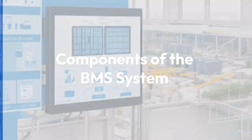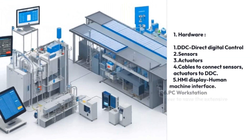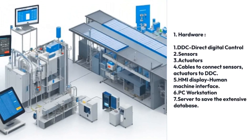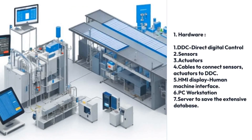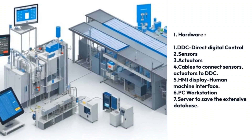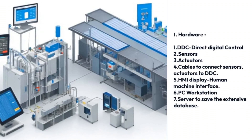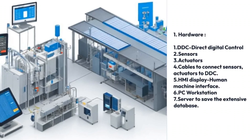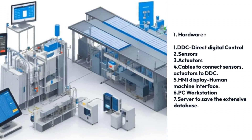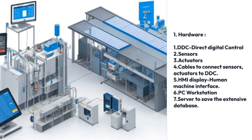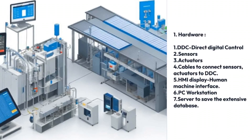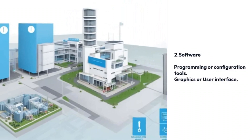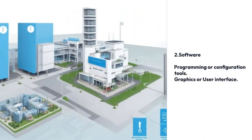Components of a BMS system: Number one is hardware, which includes DDC (direct digital controller), sensors, actuators, cables to connect sensors and actuators to the DDC, HMI display (human machine interface), PC workstation, and server to save the extensive database.